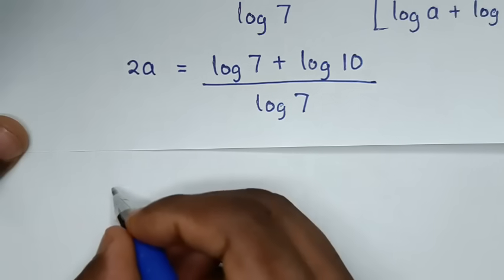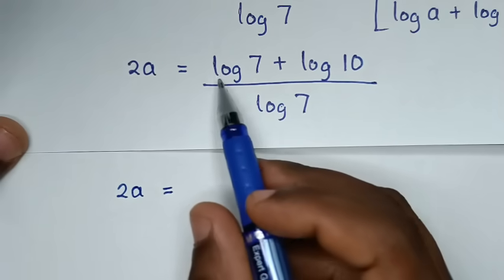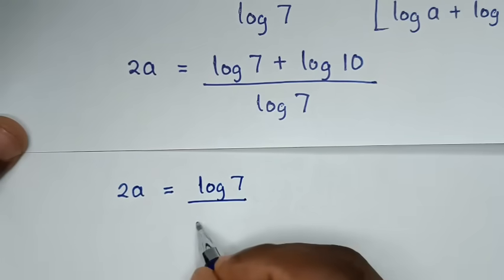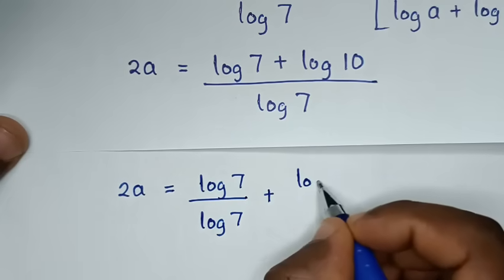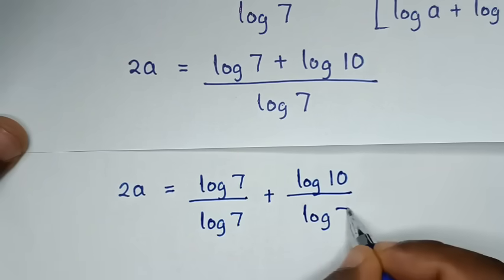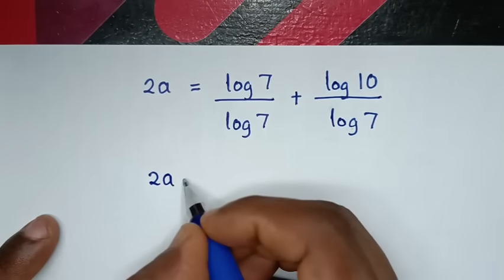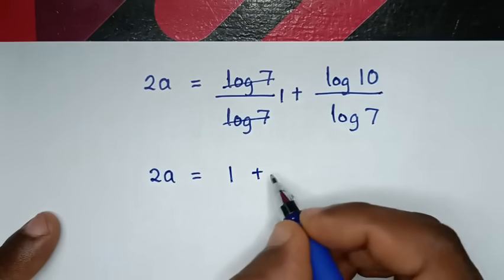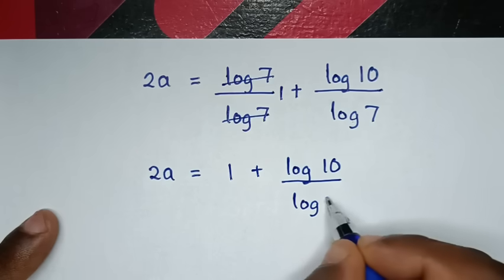Then in the next step, 2A equals — dividing log of 7 into each part: log of 7 over log of 7 plus log of 10 over log of 7. So log of 7 divided by log of 7 is 1, giving us 2A is equal to 1 plus log of 10 over log of 7.